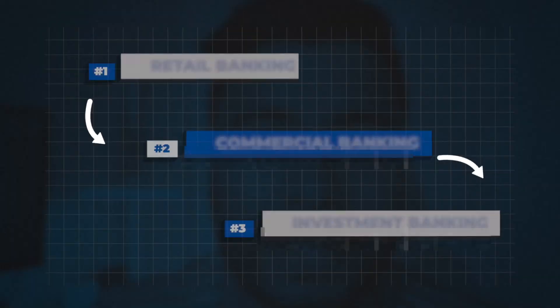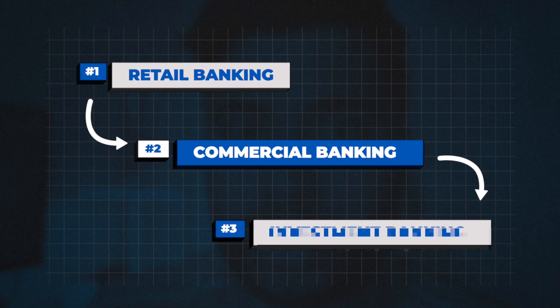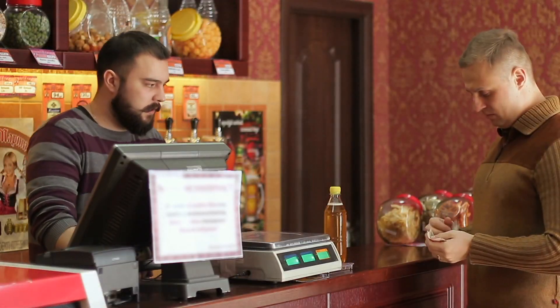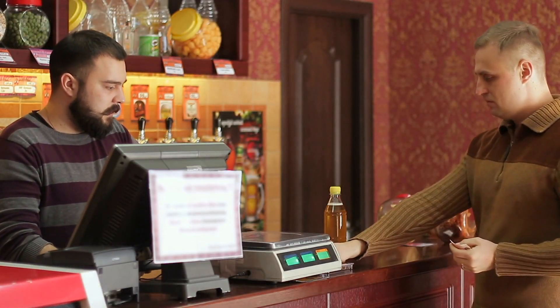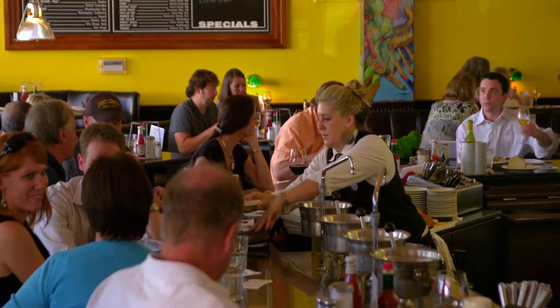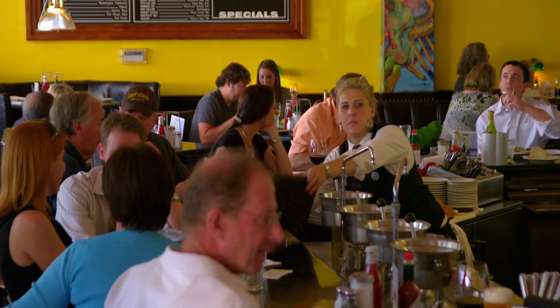The second big type of banking is commercial banking. When you think of businesses — any small businesses, whether it's a bakery shop, a gym chain, a restaurant or a hotel — they all need business bank accounts, and that falls under commercial banking. Commercial banking is a huge area within the world of finance.